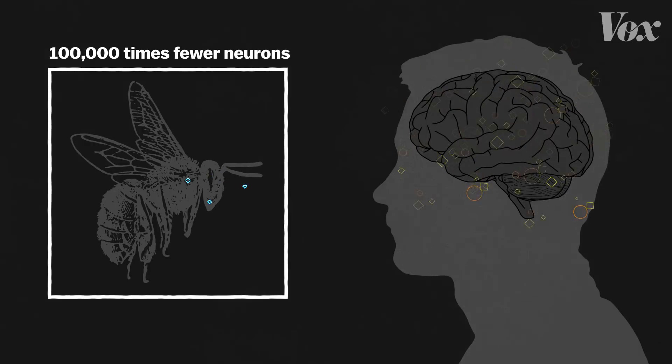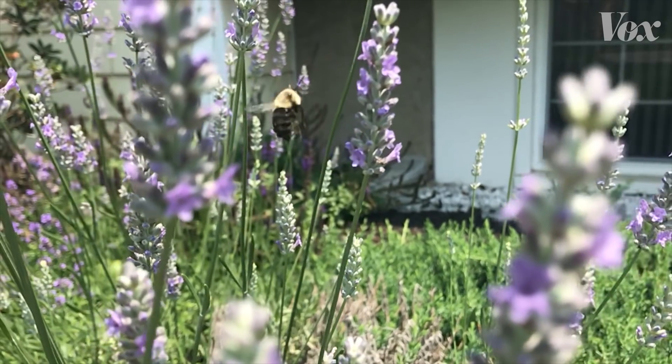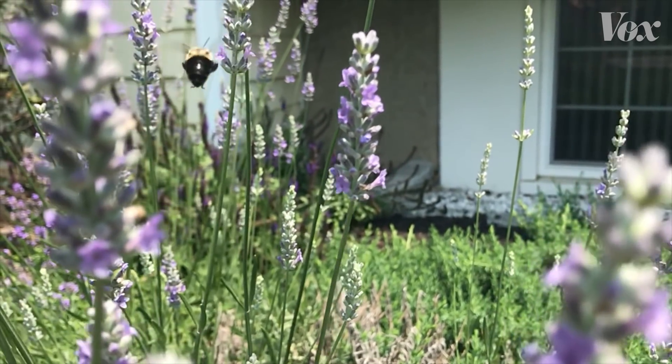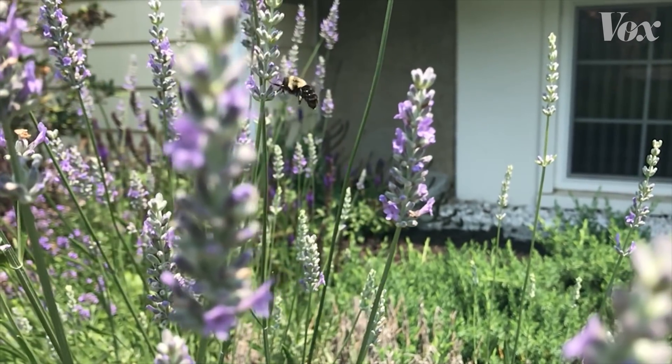The brain of a bee has 100,000 times fewer neurons than the brain of a human, yet scientists in Australia were able to teach them that zero is a quantity less than one.